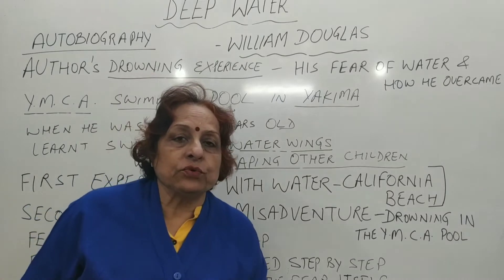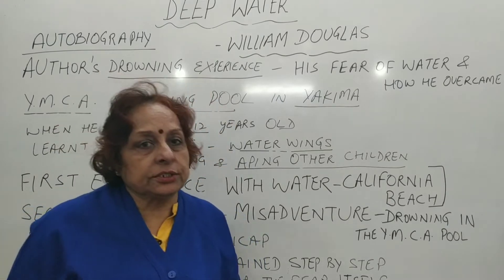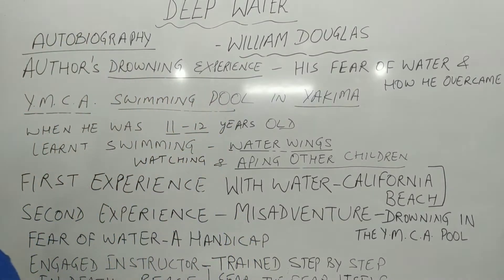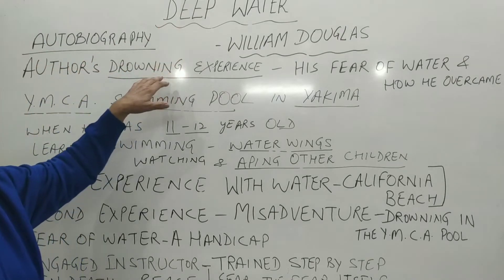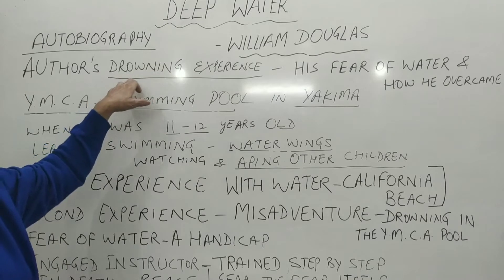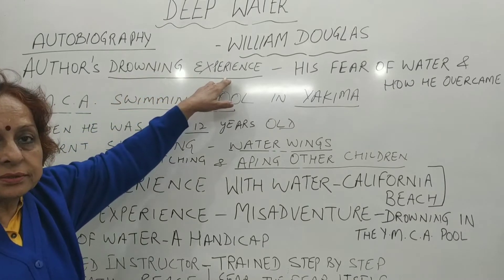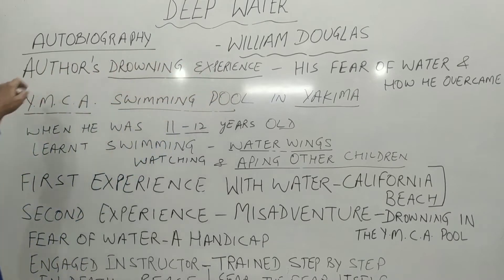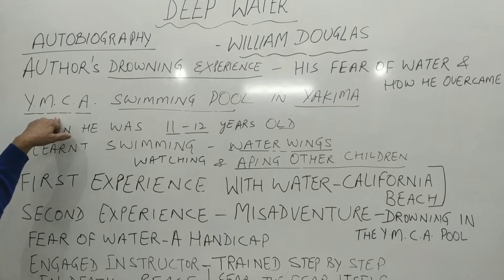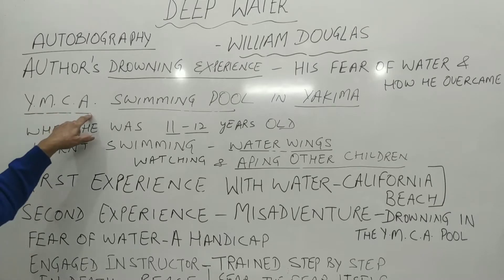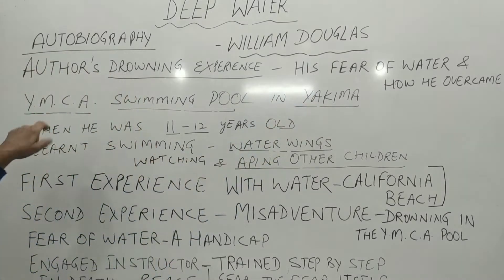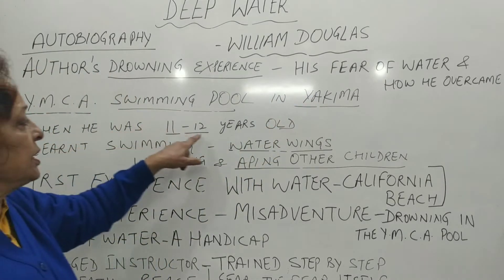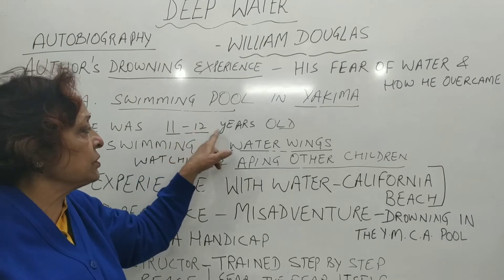Now the objective kind questions, very short answer questions. First: what is this lesson 'Deep Water' about? It is about the author's drowning experience. What is the name of the pool where he joined to learn swimming? YMCA pool. Where was this pool? In Yakima. How old was he when he decided to learn swimming? 11 or 12 years old.